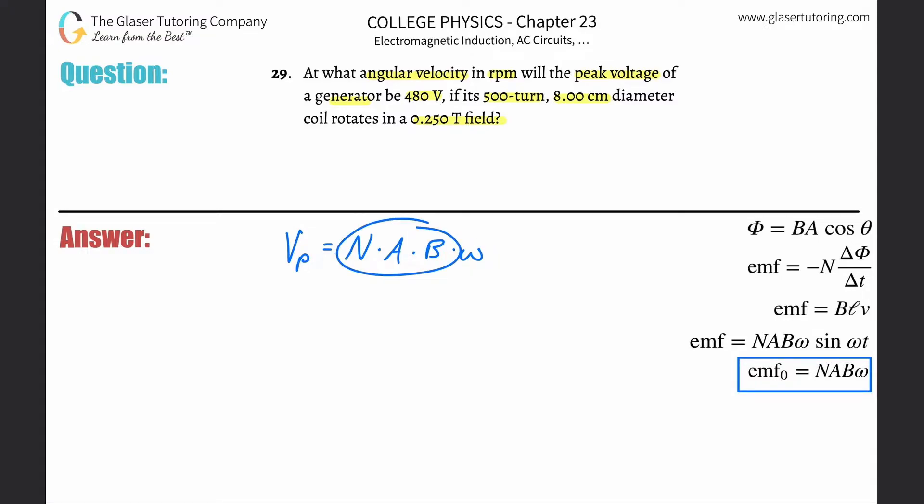So when we solve for omega, we get to divide out these three variables. That means that omega here will be equal to the peak velocity divided by the number of turns, area, and magnetic field.